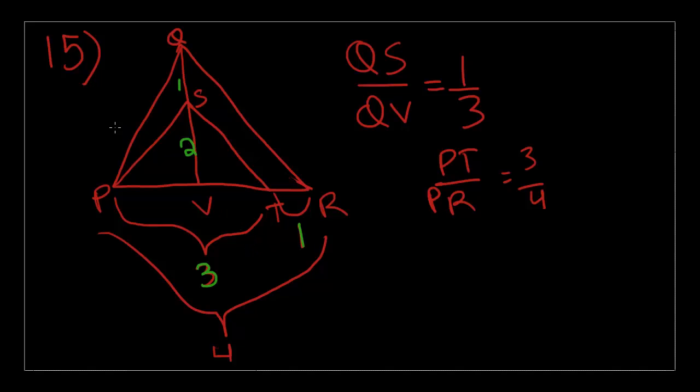They're asking us what is the fraction, the area of triangle PST over the area of triangle PQR. The area of triangle PST, which is this thing over here, will be 2 times 3 divided by 2. Because 3 is the base, 2 is the height, and just divide by 2. So this cancels out to just 3. This is the top part of the fraction.